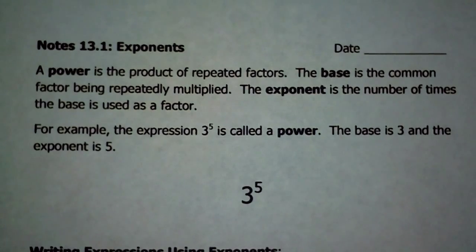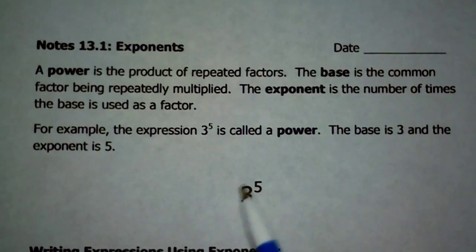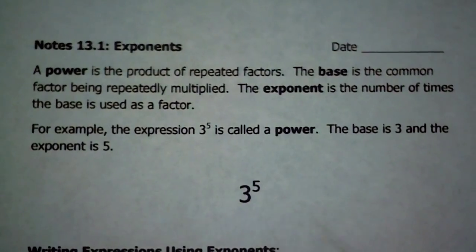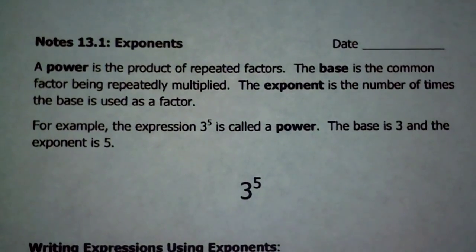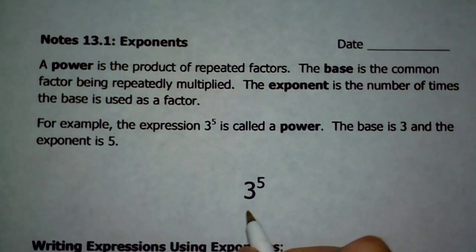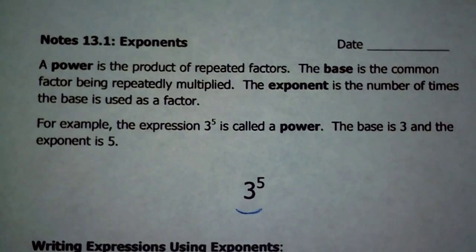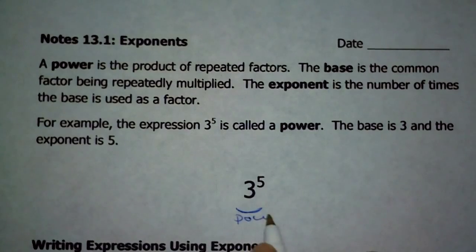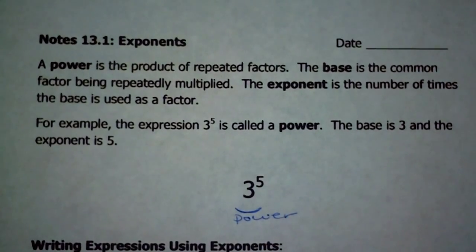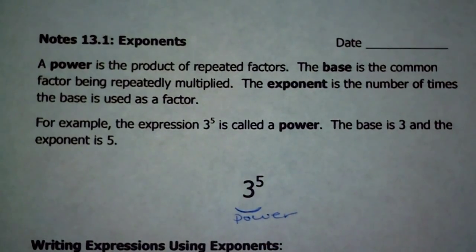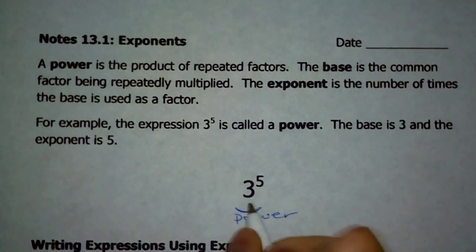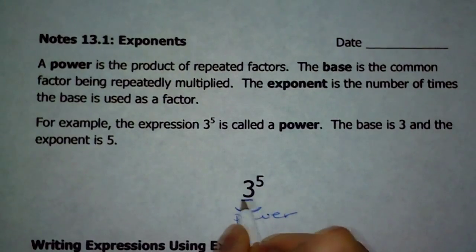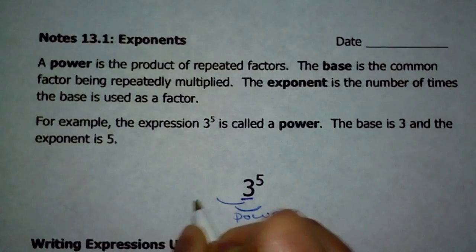So what does all that mean? We're going to use this — this is 3 to the 5th power. This whole entire expression right here is referred to as a power. So the whole entire thing all together is a power. At each individual part, this 3 is the base.